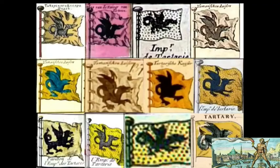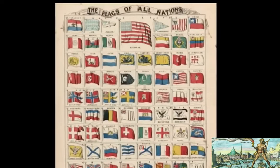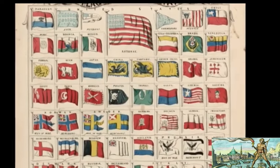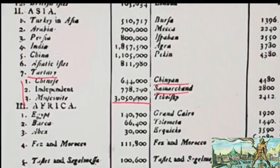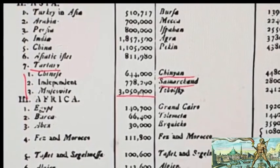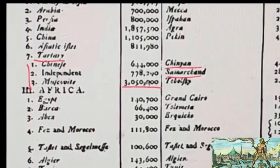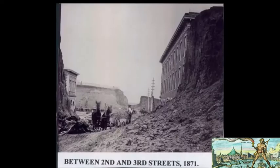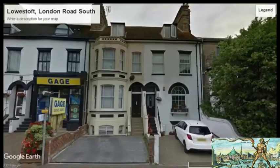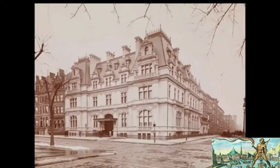We also find Tartaria mentioned in historical and government documents, described as a country having its own flag, its own people, and really whatever any typical country has. Not only was it clearly a country, but it seems to have played a very significant role in our history, and at one point may have even been the largest country or empire in the world — leaving its mark on every continent through architecture and art, hence the name 'the Great Tartaria' or 'Grand Tartaria,' which we can see on old maps.